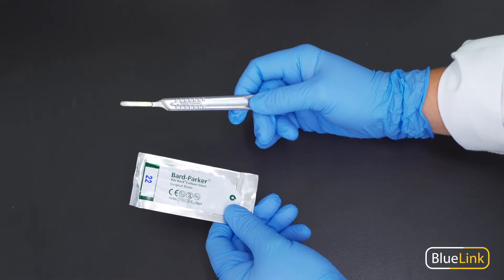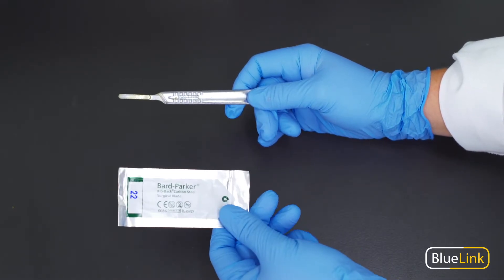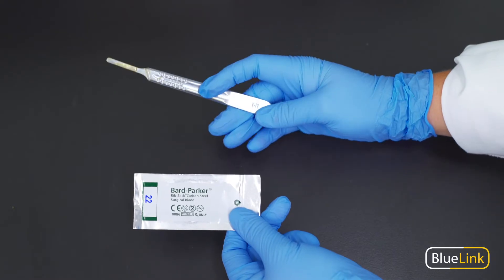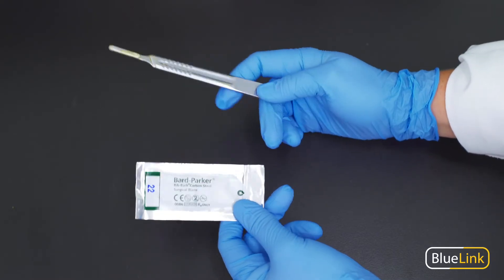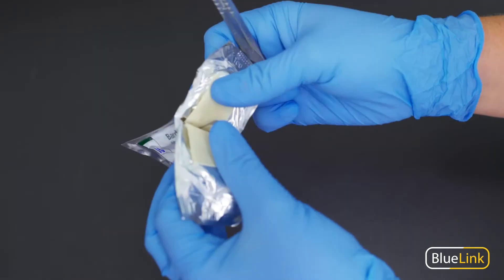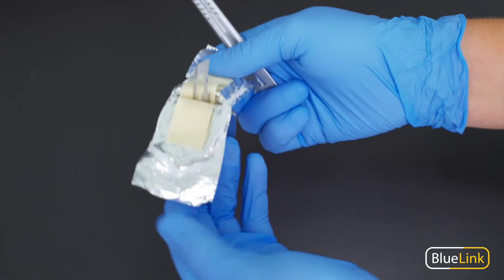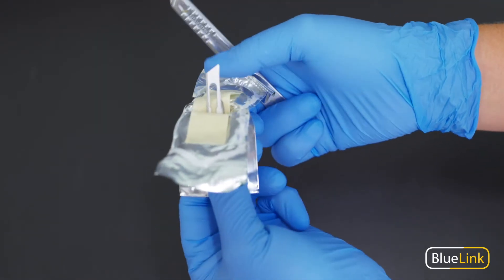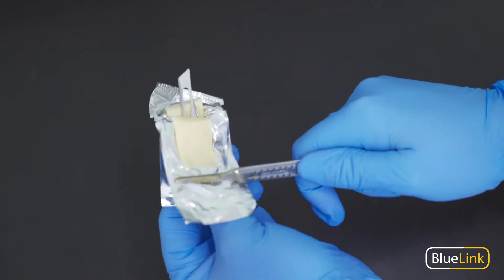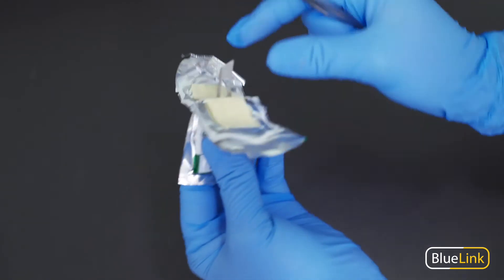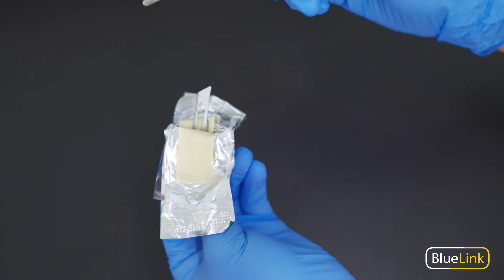So when you're ready to load your scalpel, you'll need your 22 scalpel blade and a number four scalpel handle. You'll go ahead and open this aluminum packaging that the blade comes in and you're going to open it about halfway because we want to leave the blade within its protective covering so that we don't cut ourselves on the sharp edge of the blade.